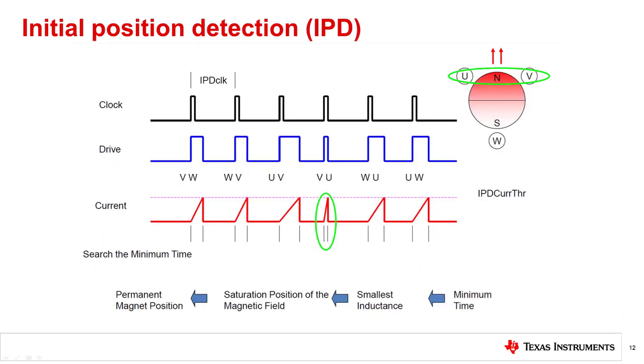Using the concept of current rise time dependency on the rotor magnet position, the IPD method sequentially applies voltage across two of the three motor phases in all six permutations while monitoring the current rise time. When the current reaches the threshold, the voltage across the motor is stopped, and the system measures the time it takes from when the voltage is applied until the current threshold is reached. The state with the shortest current rise time represents the state with the minimum inductance, and the minimum inductance of a particular driving state indicates that the motor is aligned with that particular energized phase. The system can then proceed with the reliable motor startup using the known initial rotor position.